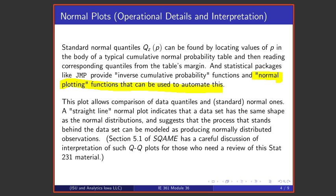What's a normal plot good for? One makes a comparison of data quantiles and standard normal ones looking for a straight line. If one has a straight line on a normal plot, that suggests that the process that stands behind the data generating mechanism in the long run will make observations that are normal looking.